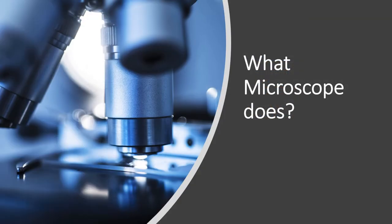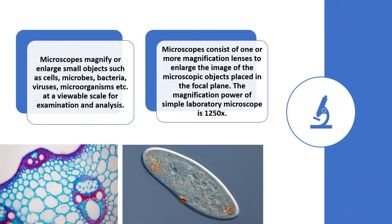What microscopes do: Microscopes magnify or enlarge small objects such as cells, microbes, bacteria, viruses, and microorganisms at a viewable scale for examination and analysis. Microscopes consist of one or more magnification lenses to enlarge the image of the microscopic objects placed in the focal plane. The magnification power of a simple laboratory microscope is 1250x.